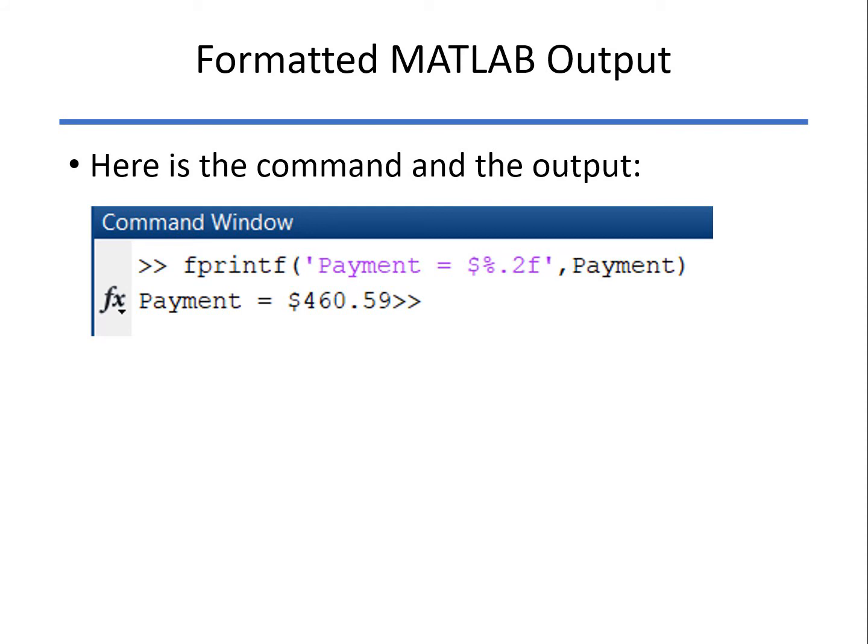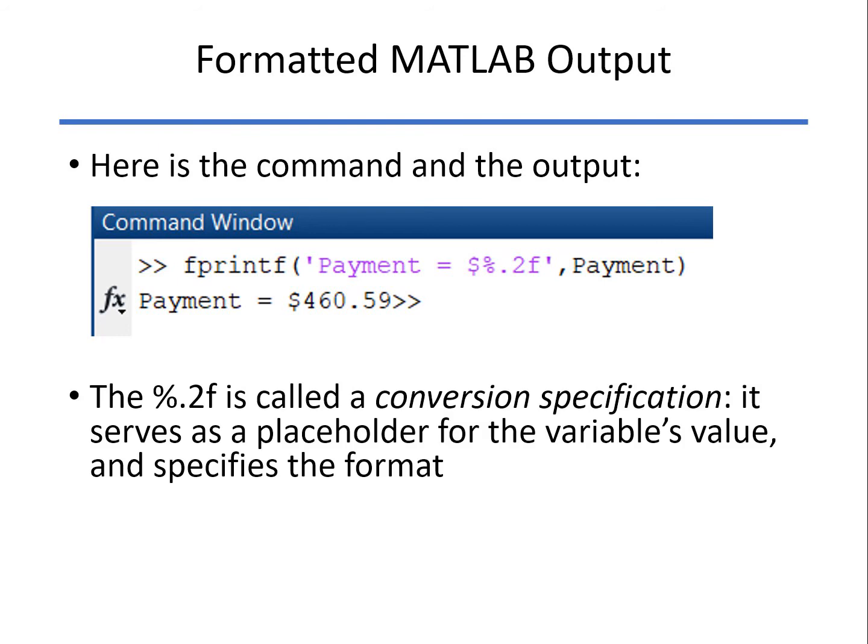Now notice what comes immediately after the percent is what's called the conversion specification. That's where the payment amount will go. And it will be formatted in this time with two decimal places in what's called a fixed format.